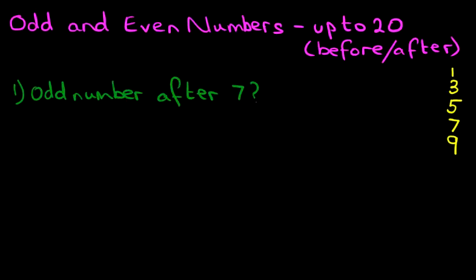So the question is, which odd number comes after 7? Well it's a nice easy one. The one after 7 is 9. And that is our answer. It's really as simple as that.